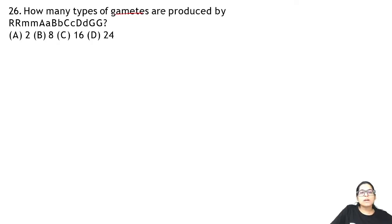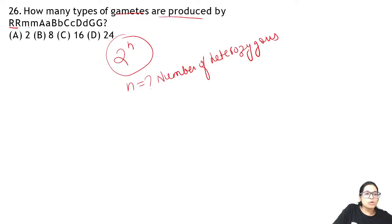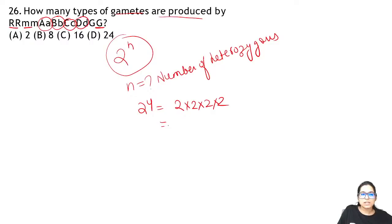Question 26: how many gametes are produced? The formula for gametes is 2 to the power n, where n is the number of heterozygous loci. Here there are 4 heterozygous loci, so 2 to the power 4 = 2×2×2×2 = 16 gametes. So the answer is C.